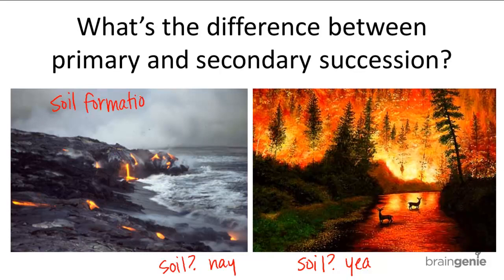So primary ecological succession can occur on a newly formed volcanic island or on a rock exposed from a receding glacier. Those are just two random examples.